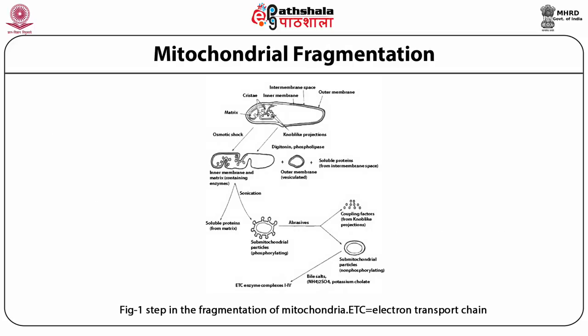Oxidative phosphorylation, being a mitochondrial process, is studied by isolating and then fragmenting mitochondria. In the first fragmentation step, the outer membrane is removed by treatment with various detergents — phospholipase and digitonin. Two particulate fragments result: the outer membrane either in the form of vesicles or completely solubilized, and second, the inner membrane plus the mitochondrial matrix enzymes.